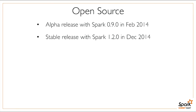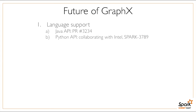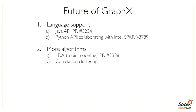As of the Spark 1.2 release in December, GraphX is no longer an alpha component—it's a stable component, meaning the API is stable and future changes are guaranteed to be backwards compatible. Looking ahead, there are Java and Python APIs coming out; currently it's only supported in Scala. There are also some new machine learning algorithms coming in—these will generally go into MLlib but will use GraphX underneath.